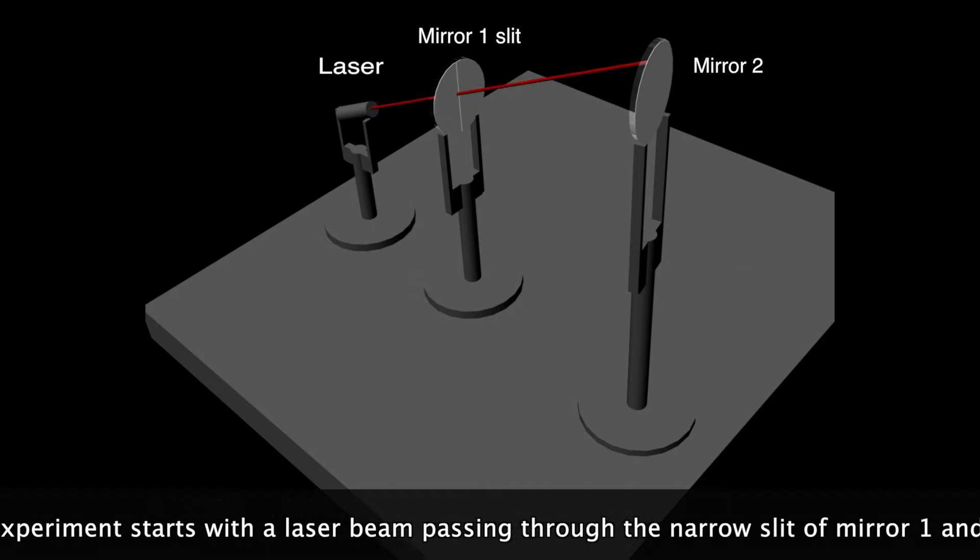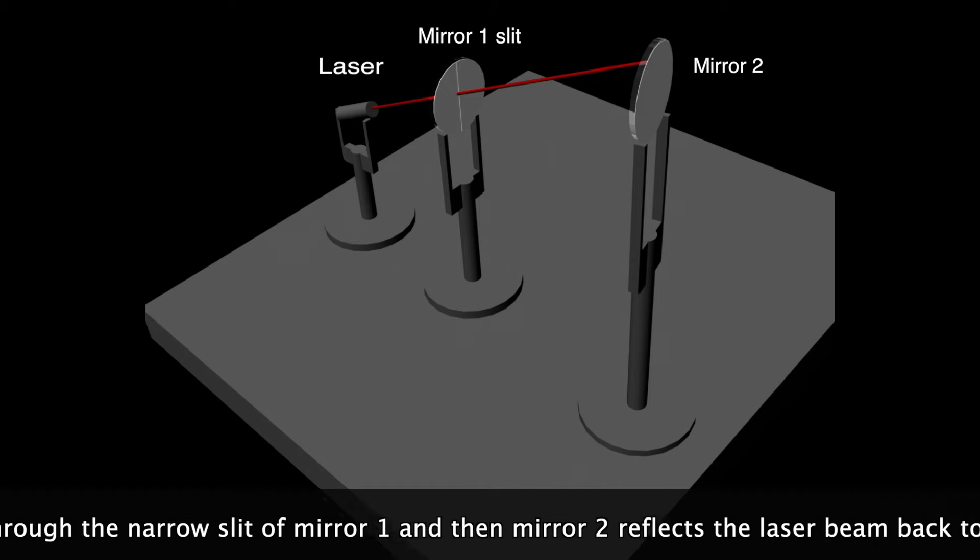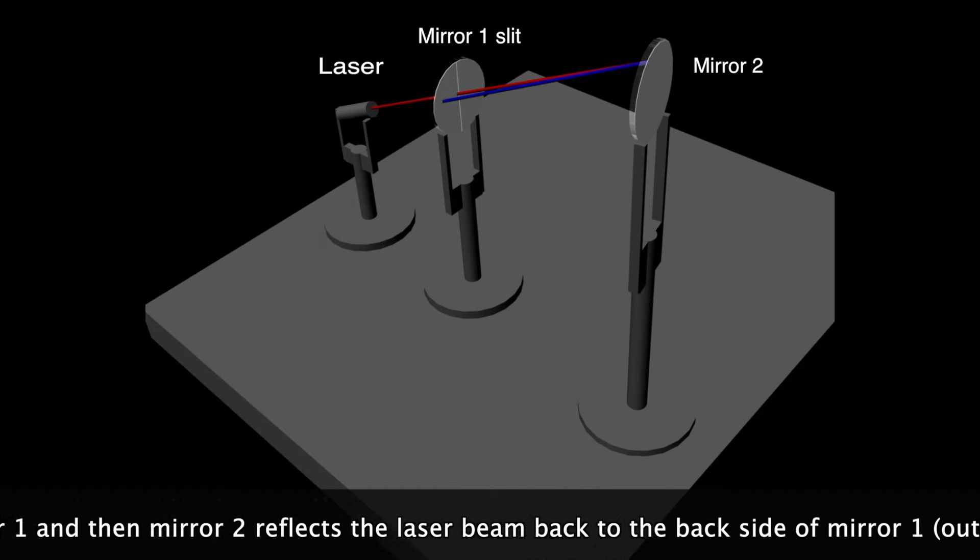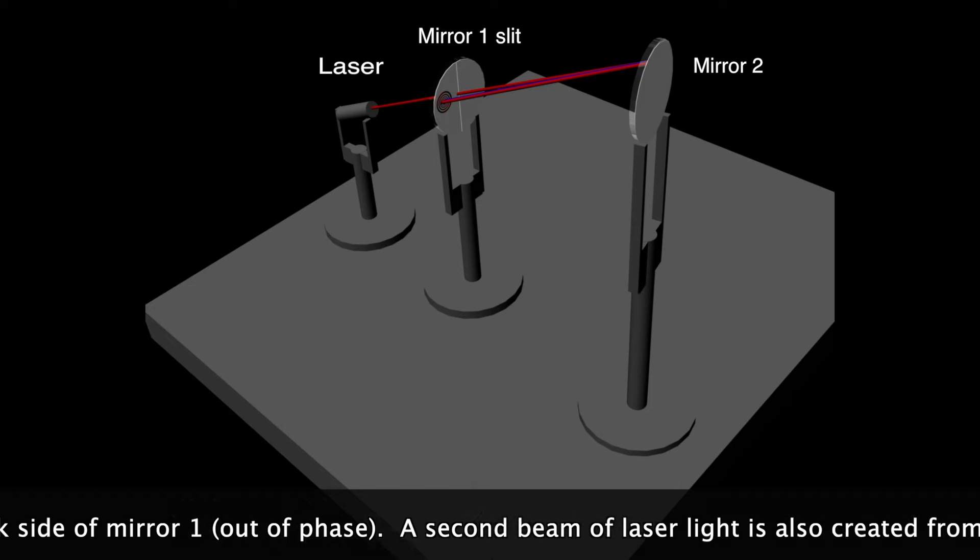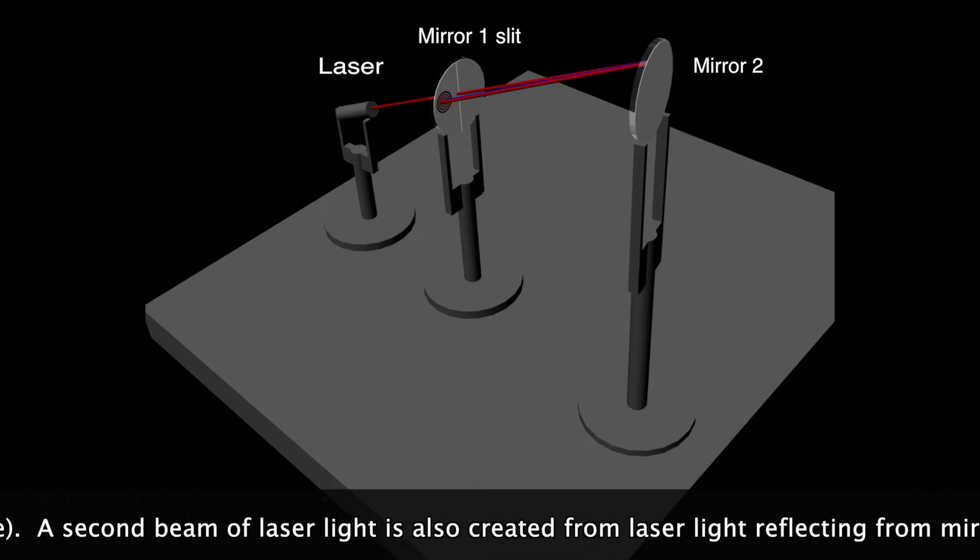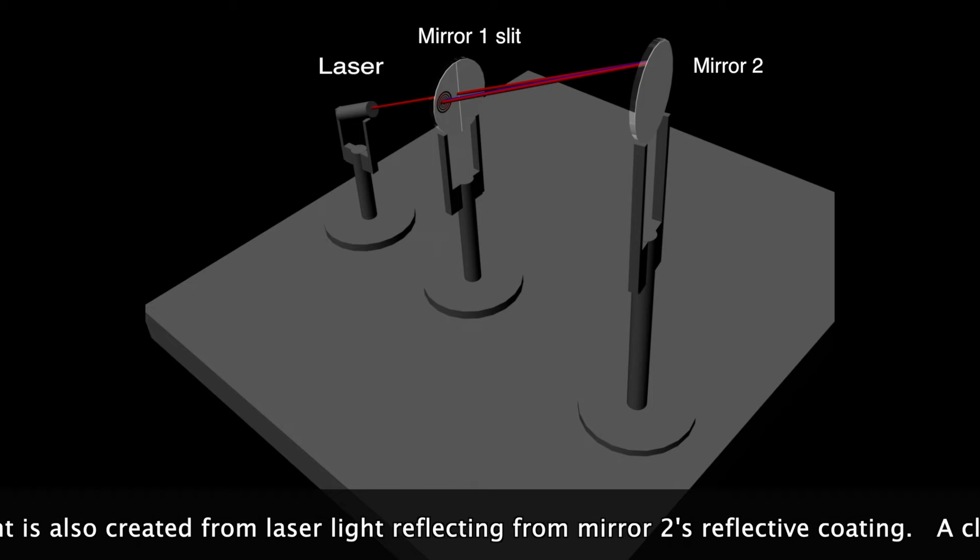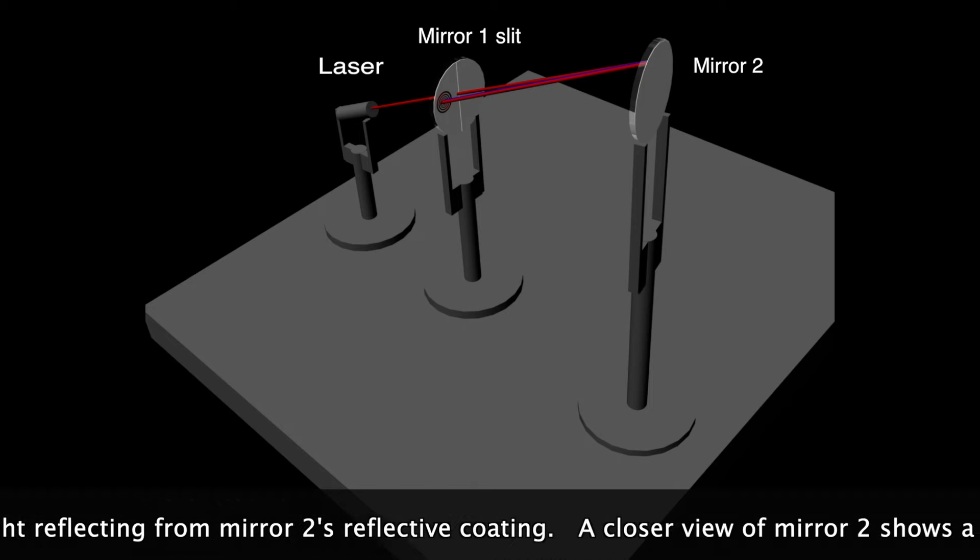The experiment starts with a laser beam passing through the narrow slit of mirror 1 and then mirror 2 reflects the laser beam back to the back side of mirror 1 out of phase. A second beam of laser light is also created from laser light reflecting from mirror 2's reflective coating.